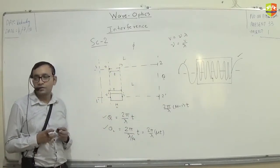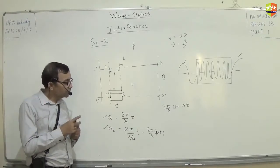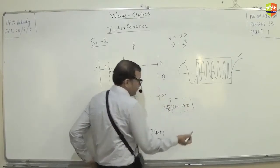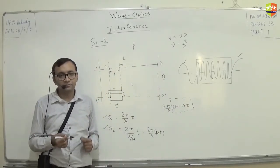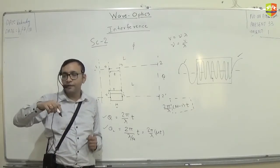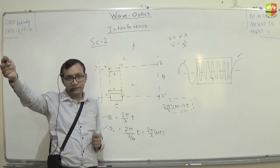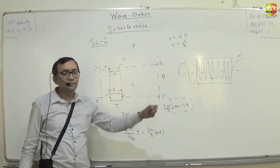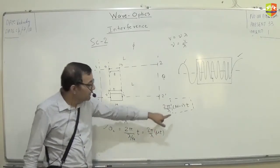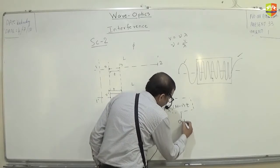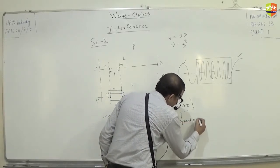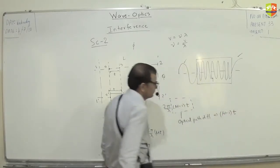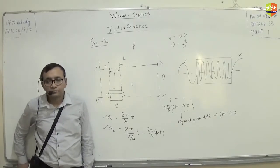This particular thing inside the box — (μ − 1)t — behaves as if it is a path difference. If path difference is Δx, phase difference is 2π/λ × Δx. So this behaves as if it is a path difference, but actually there is no path difference. We name this particular thing as optical path difference. Optical path difference = (μ − 1) × t.